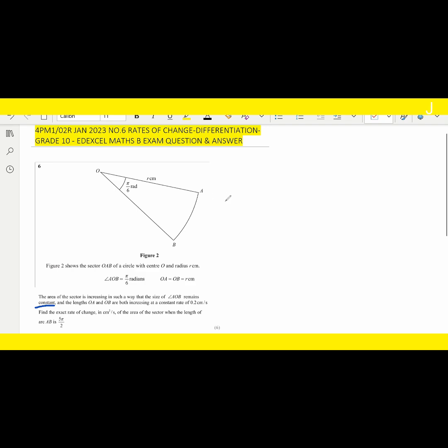We get dr/dt equals 0.2 cm per second. Now, the arc length is 5π/2. We have the formula S equals θR, that's the formula for arc length. The θ here is π/6, so π/6 times R. Then we cancel out the π and 2 becomes 3, so R will be 5 times 3, which is 15 equals R. Our R is 15 cm.